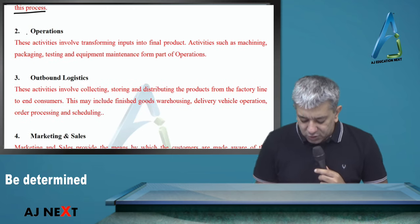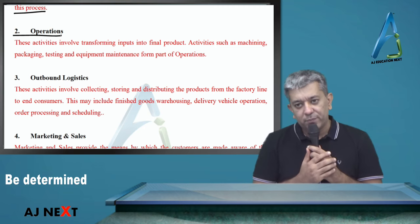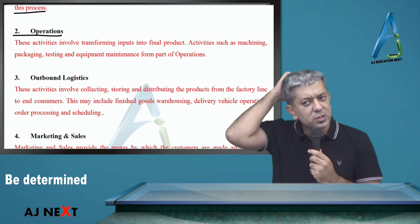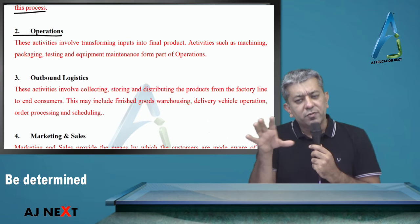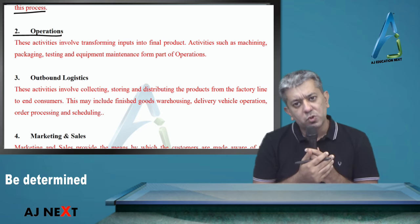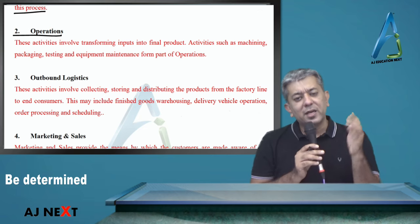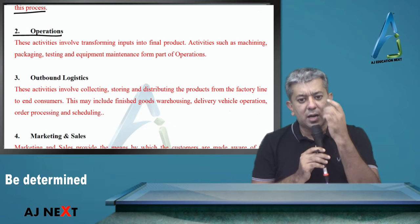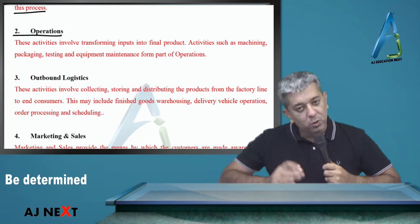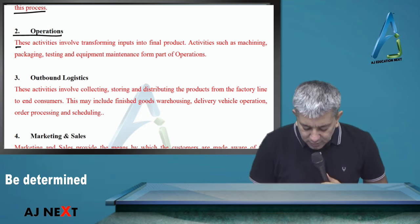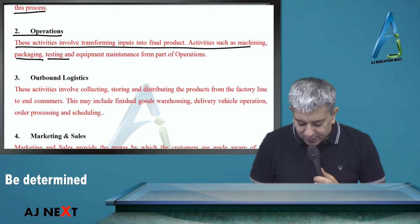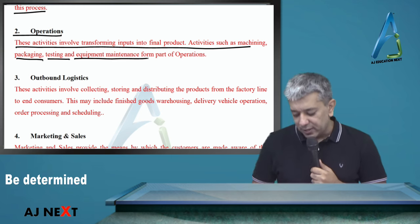Second: operations. Obviously aap loog ka manufacturing operations hai, which is basically raw materials ko machines ke inder daalna, product bahar aana. Wo sara ka sara process will all come under the head of operations. Yahaan par many other things can also come — ki aapke kitne log hain jo production karate hain, aapke kya kya quality checks hain, TQM wala concept bhi aayega. These activities involve transforming inputs into the final products — activities such as machining, packaging, testing, equipment maintenance, etc.